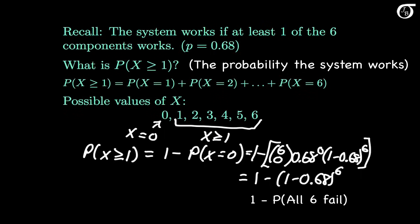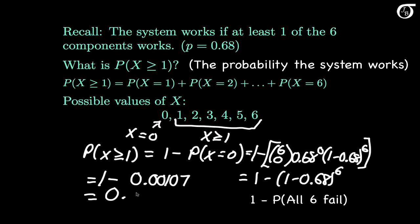All of this works out, when rounded to 5 decimal places, to 1 minus 0.00107, which is simply 0.99893. That is the probability the system will work on this mission.